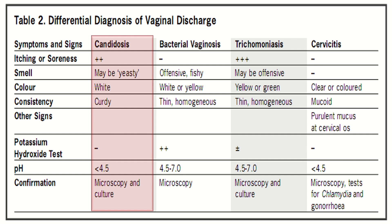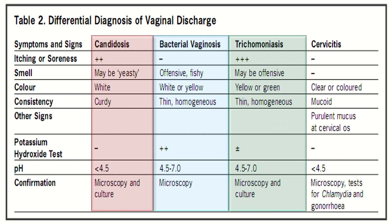In bacterial vaginosis, the smell is offensive or fishy, color is white or yellow, consistency is thin or homogeneous, potassium hydroxide test is positive, pH is in the range of 4.5 to 7, and confirmation is by microscopy.